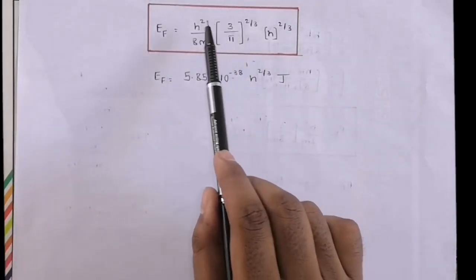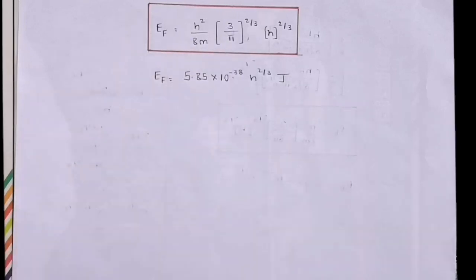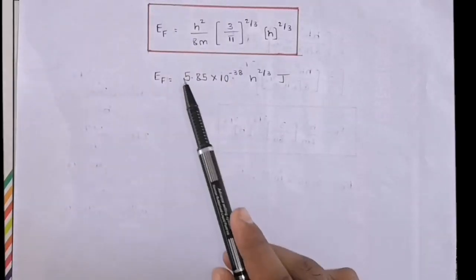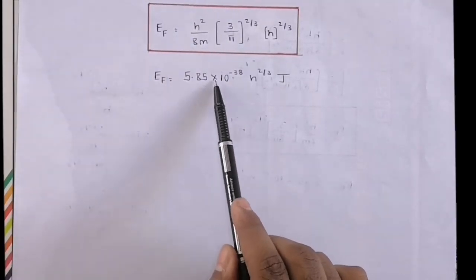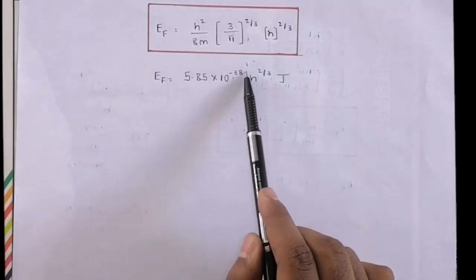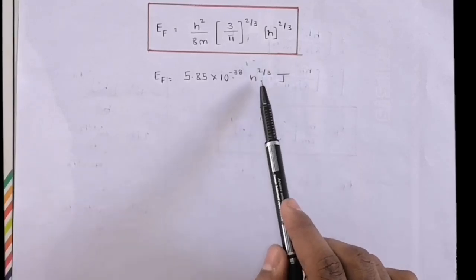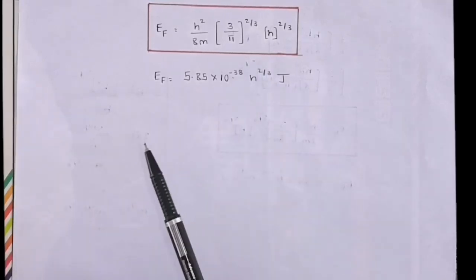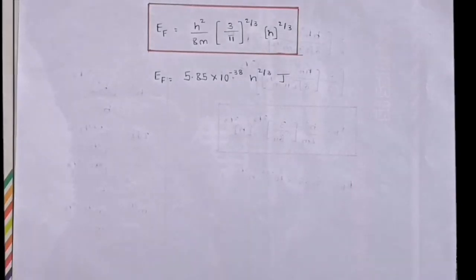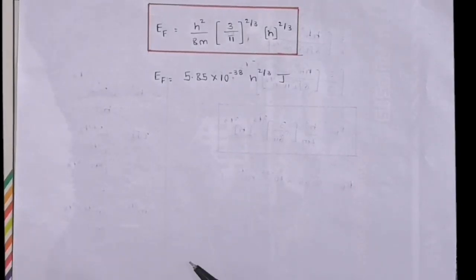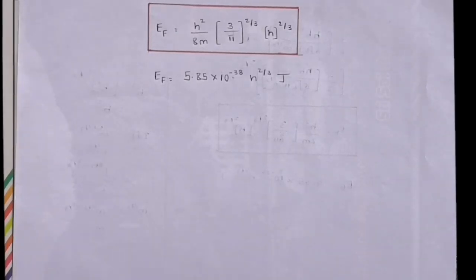Substituting the values of the constants, this simplifies to E_F = 5.85 × 10^(−38) × n^(2/3) joules. This is the simplified expression for Fermi energy. Thank you for watching — please like and subscribe for more videos.